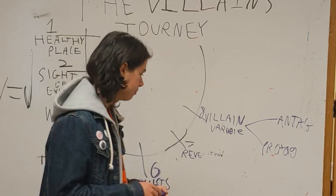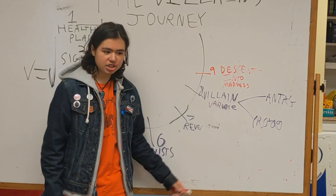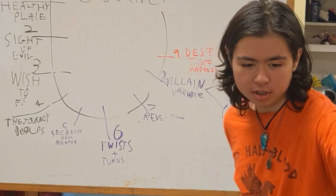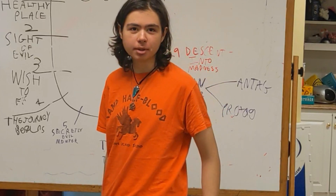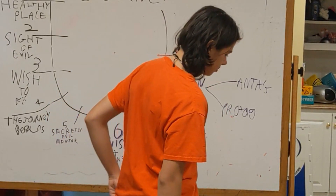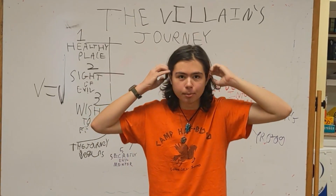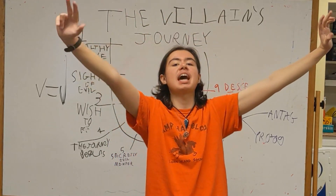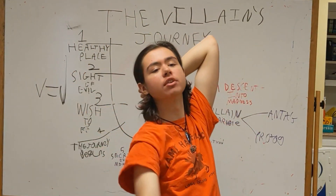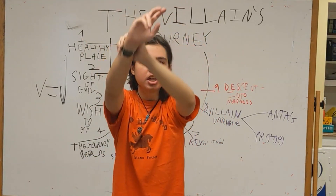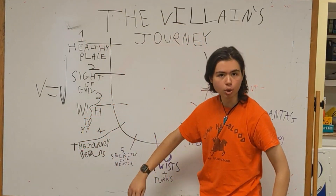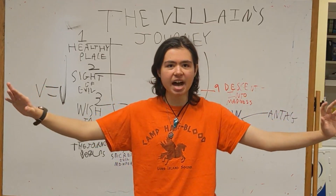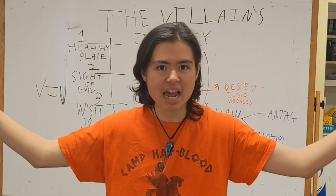Beginning with Nine: The Descent Into Madness. Following their final Descent Into Madness, the villain goes on a rampage. They wreak havoc throughout all their universe, or whatever their space is. This is the round two of their road of twists and turns — where the villain goes on their chaotic, evil rampage.